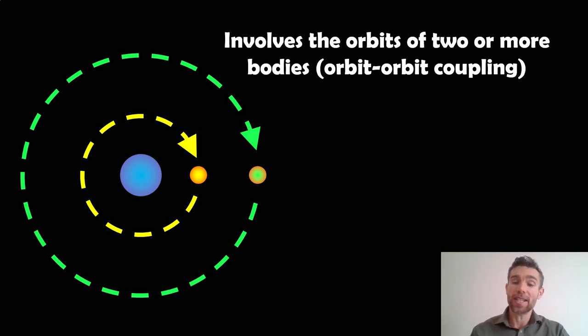With mean motion resonances, it involves the orbits of two or more bodies and is known as orbit-orbit coupling. There are other sorts of resonances that involve the rotation of the object and its orbital period, or the rotation of one object and the orbit of another, which would be spin-orbit coupling, but that's a separate video entirely. Here we're interested in just orbit-orbit coupling.